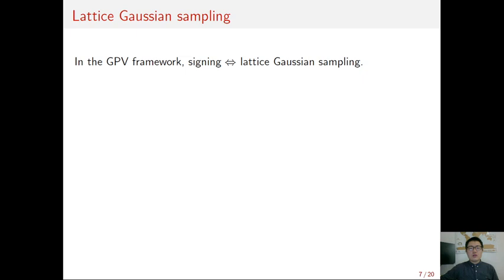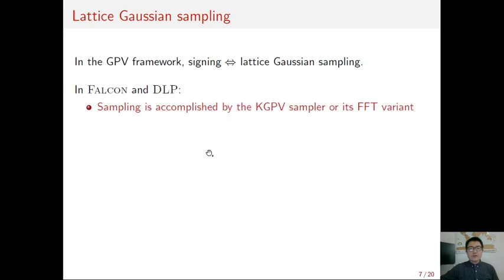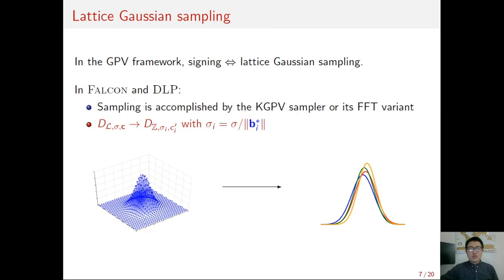In the GPV framework, signing consists in lattice Gaussian sampling. And in FALCON and DLP, the lattice Gaussian sampling is accomplished by the Klein-GPV sampler or its FFT variant, in which the high-dimensional lattice Gaussian sampling is decomposed into many one-dimensional integer Gaussian samples. And the standard deviations of those integer Gaussians are inversely proportional to the Gram-Schmidt norm of the sampling basis. Also, the Gaussian centers vary as per the message and the intermediate samples.